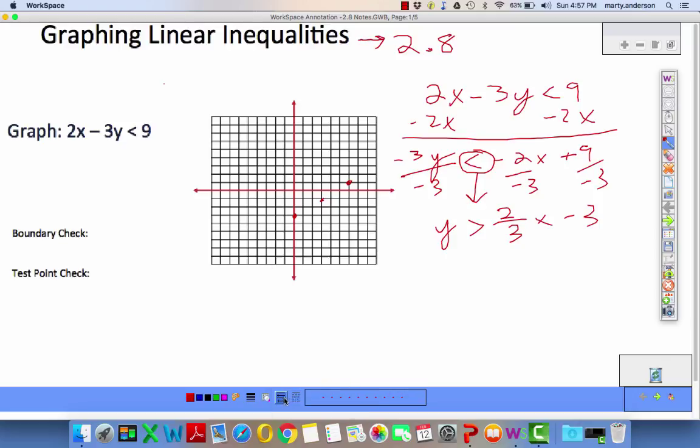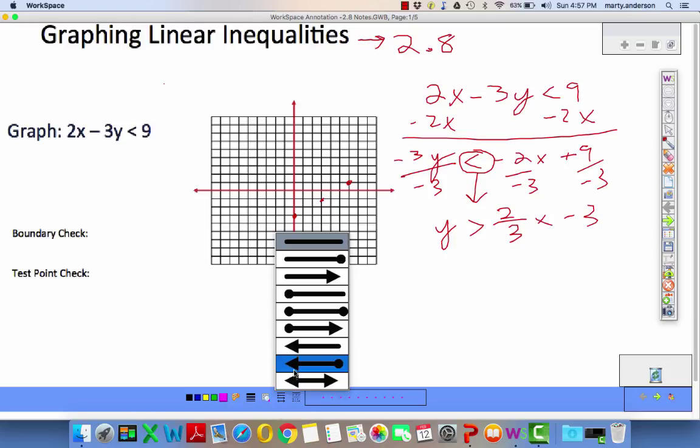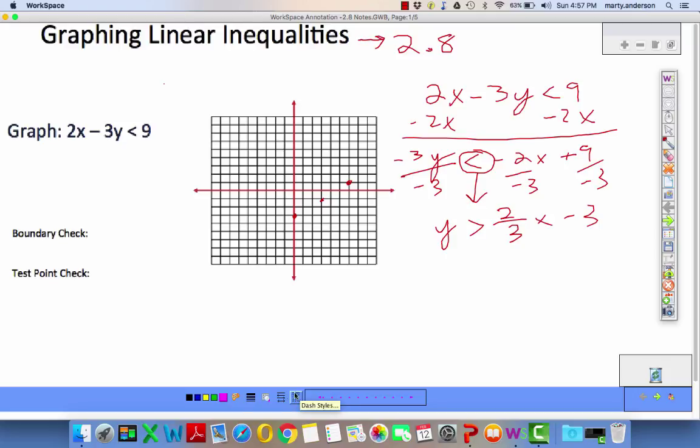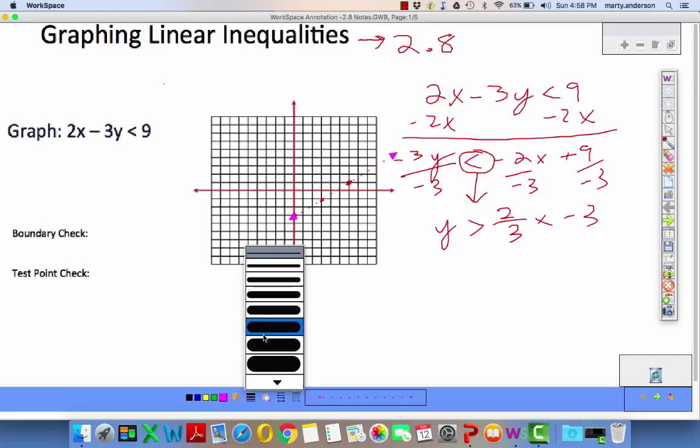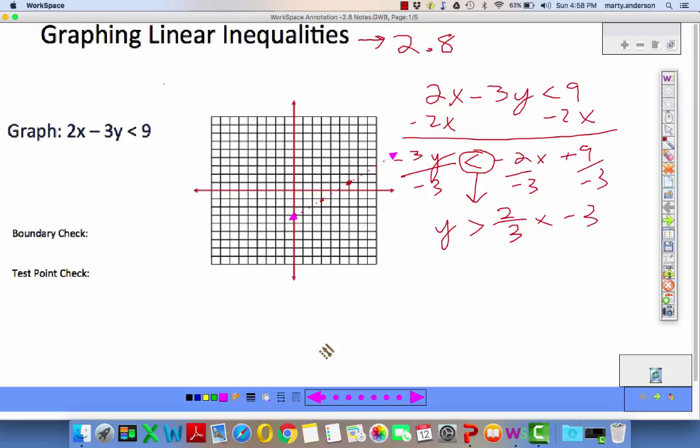So we can put in a dotted, put in some arrows, and select this. Let's go purple. That's way too light. I've got to turn that up. Let's try that again. There we go. Dotted line, shading, where?